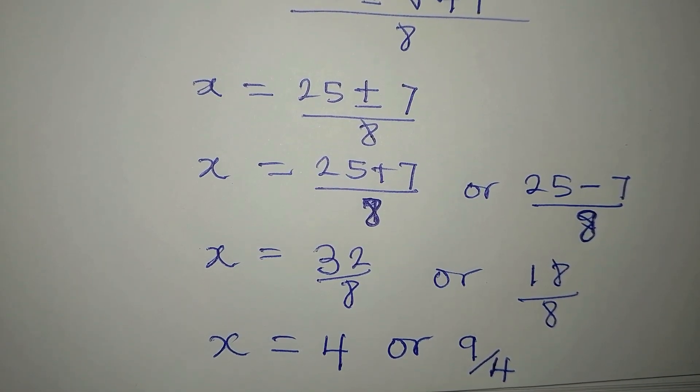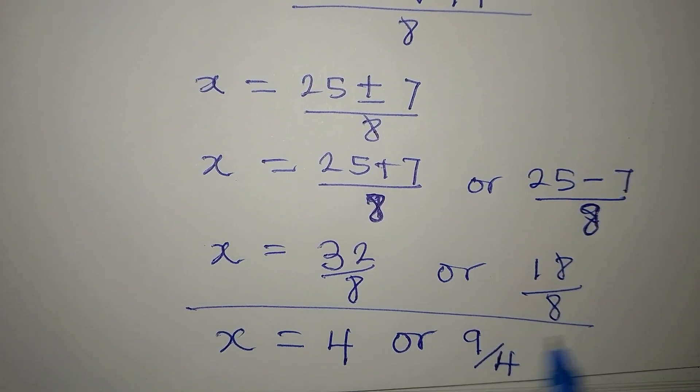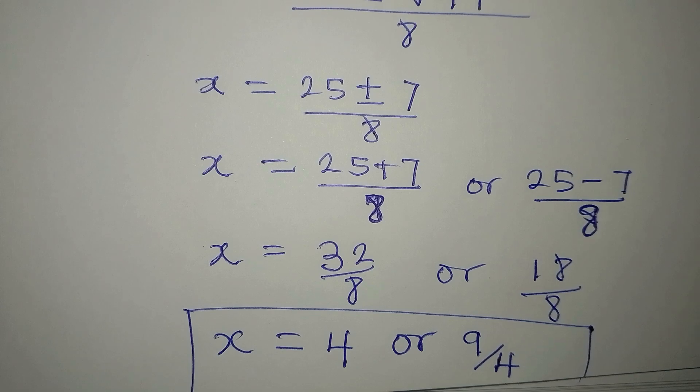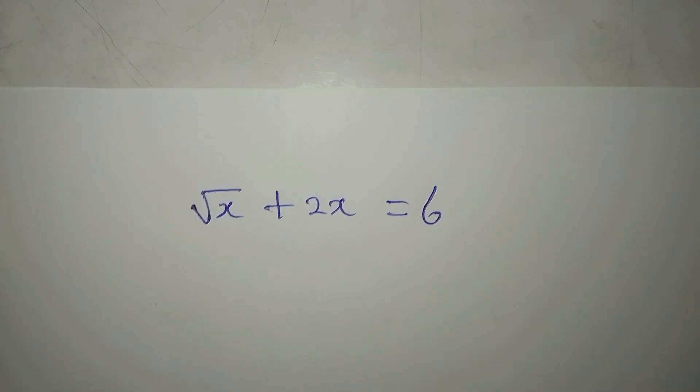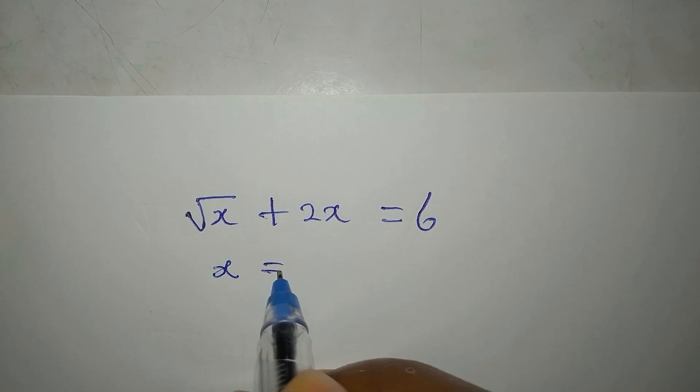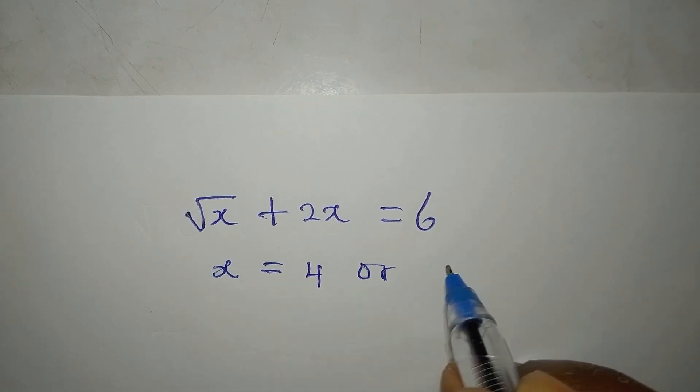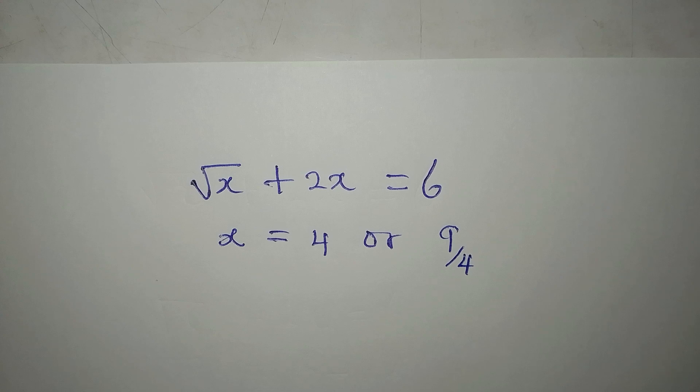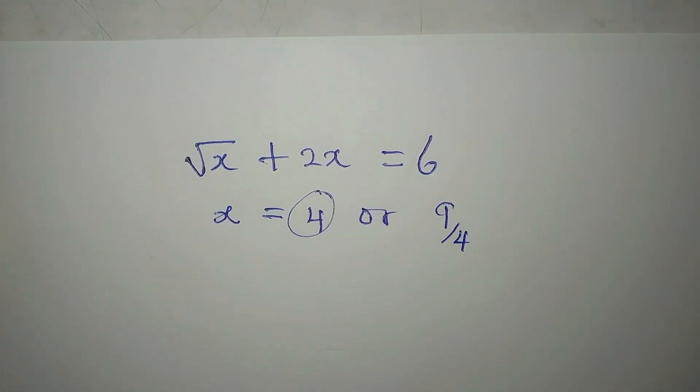Now, let's put this value into the equation and see which one will be satisfying. So this is the equation. And we have x to be equal to 4 or 9 over 4. Now, from the look of things, you should be able to understand that this value of x will not satisfy.